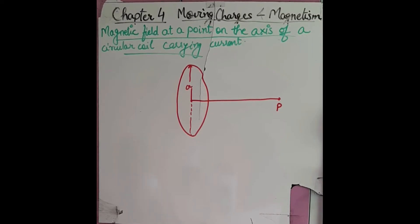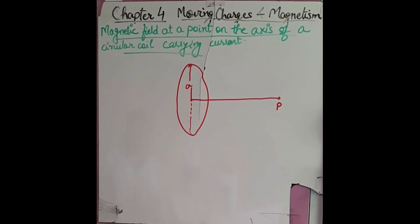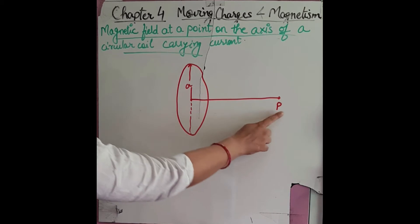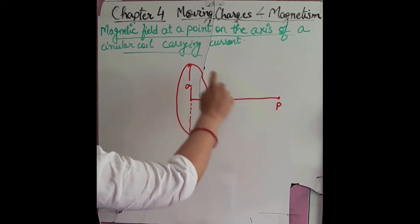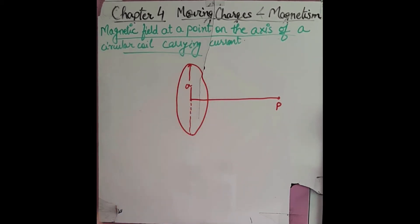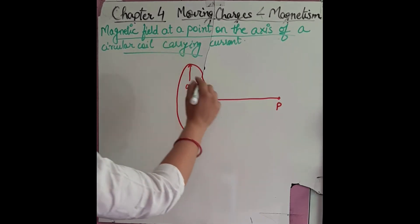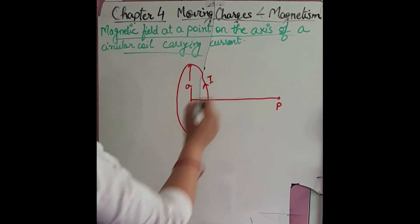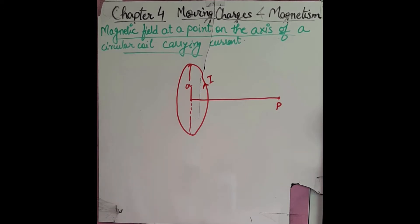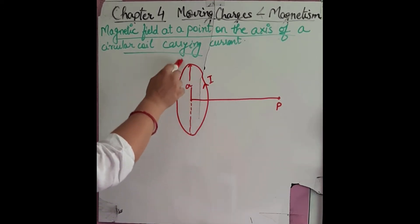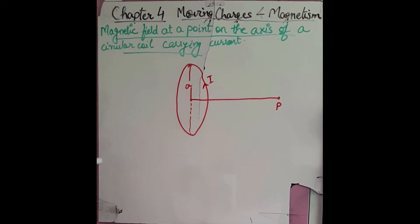Let's now calculate the magnetic field at a point on the axis of a circular coil carrying current. We will make use of Biot-Savart's law to calculate the field. There is a circular coil of radius A, with current flowing through it, and the center of this coil is O.